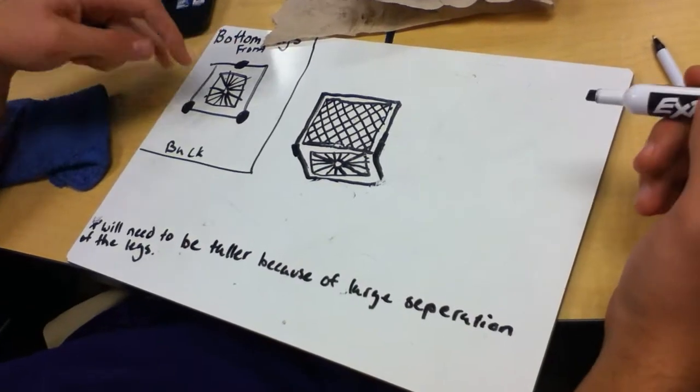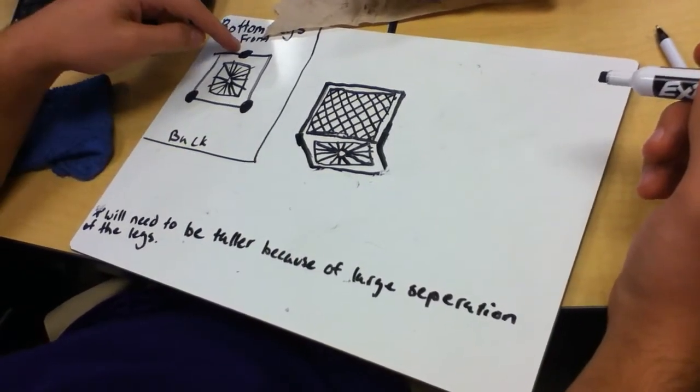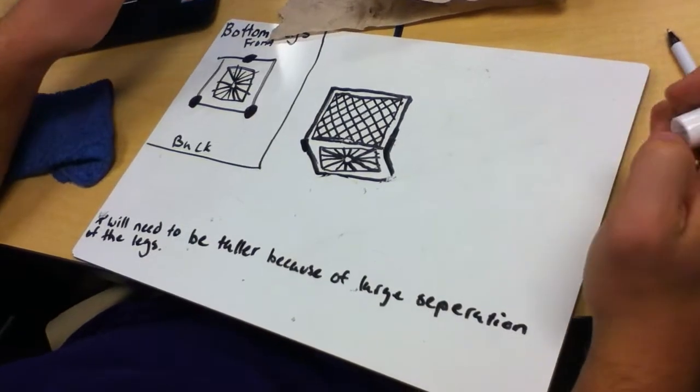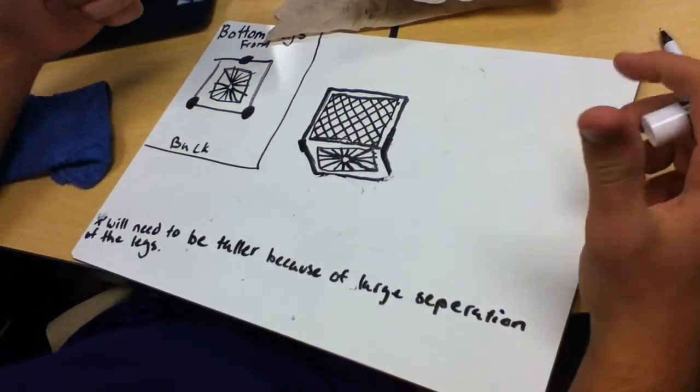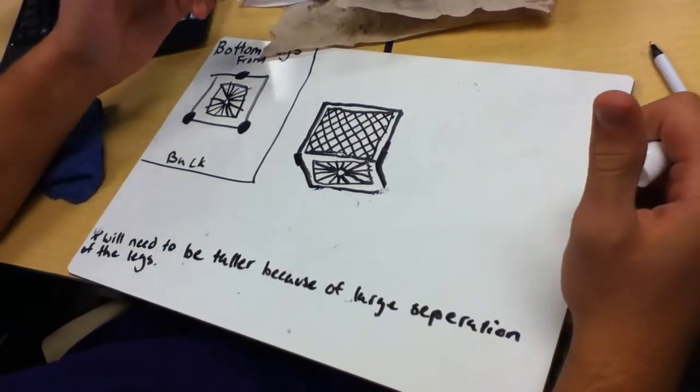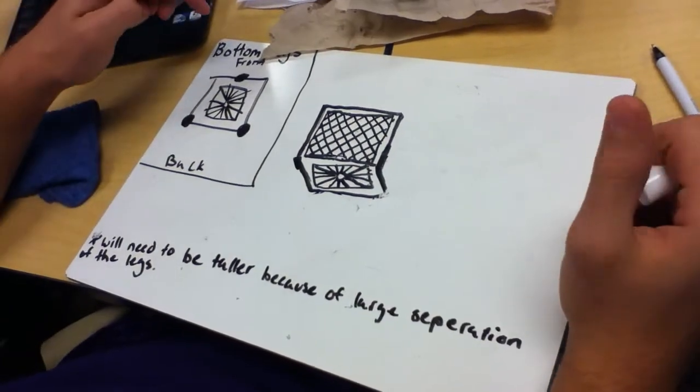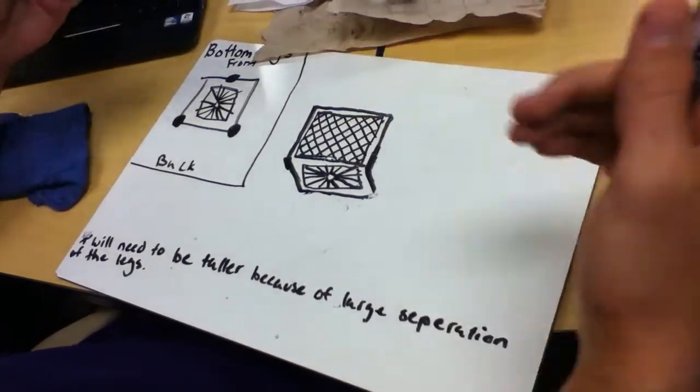And since I'm going to have two of the legs attached to the back and one in the front, they're going to be separated farther out and it's going to be like a bigger angle, so in order to be able to use that, it'd have to be like taller.